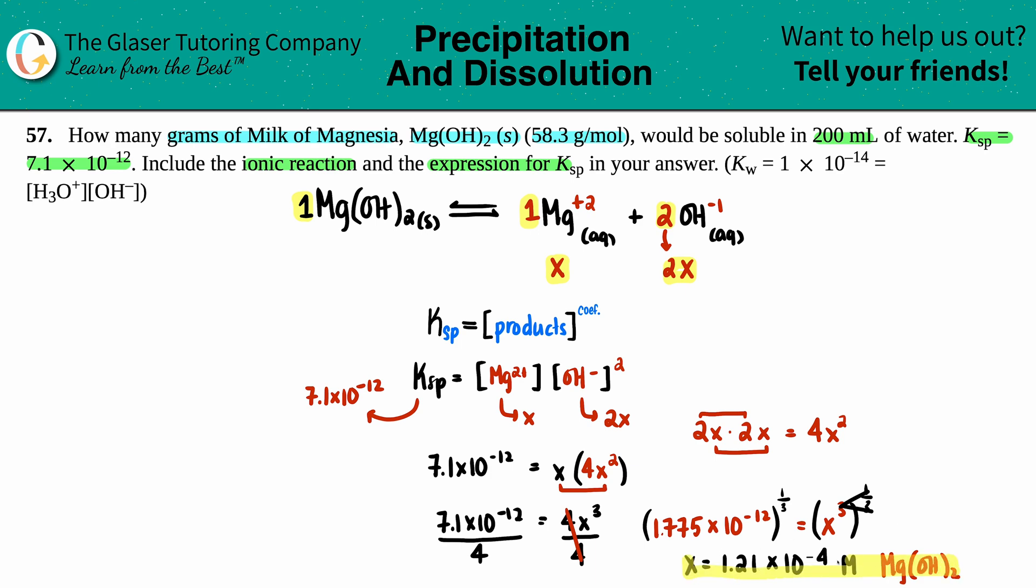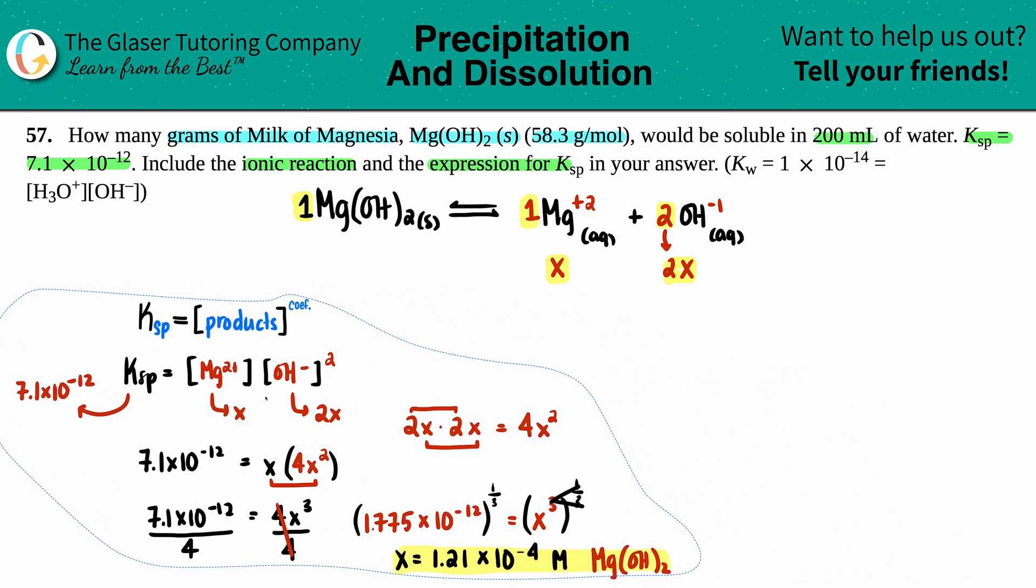Now we just have to use that information to get to grams. We have a molarity, but they want grams. I think of my molarity formula: molarity equals moles divided by liters. I have a molarity of 1.21 times 10 to the negative fourth molarity. If they want grams, maybe I could find my moles first. Do I have a liter value? They told me I was in 200 mils of water.